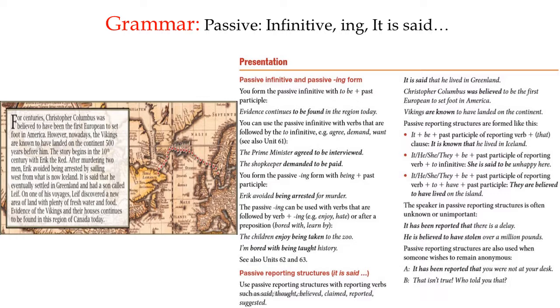Passive reporting structures: it is said. Use passive reporting structures with reporting verbs such as said, thought, believed, claimed, reported, and suggested. For example: it is said that he lived in Greenland. It is said—who said? Nobody specific, so you make it passive because the person who said that is anonymous and unknown. Christopher Columbus was believed to be the first European to set foot in America. Vikings are known to have landed on the continent. Passive reporting structures are formed like this: it plus to be plus past participle of the reporting verb plus that clause. Examples: it is known that he lived in Iceland. Or: he, she, they plus to be plus past participle of reporting verb plus to infinitive.